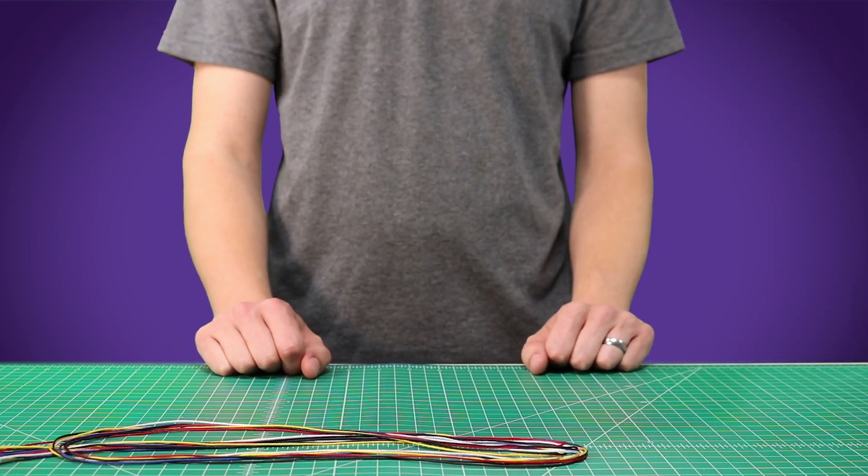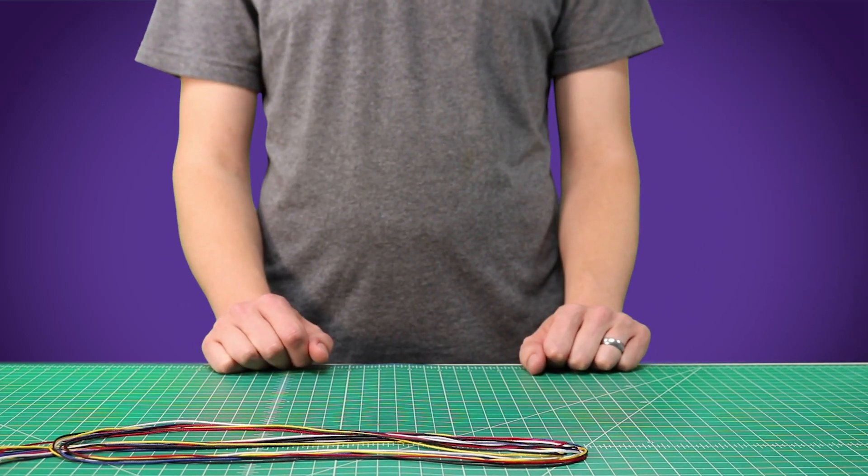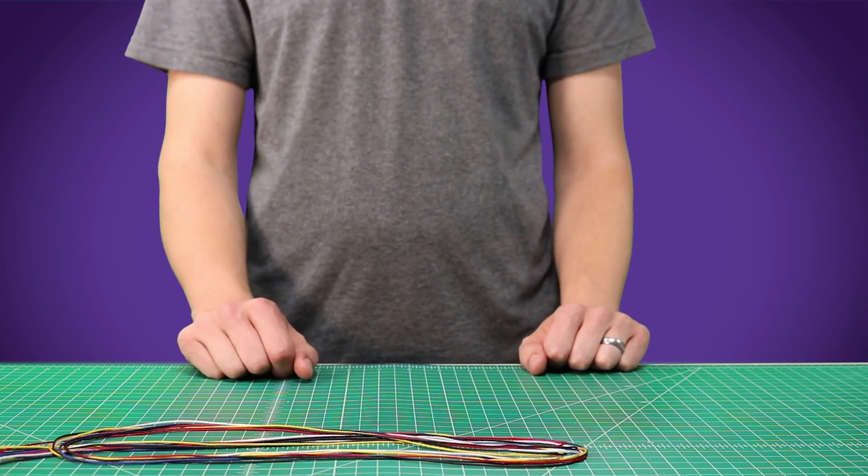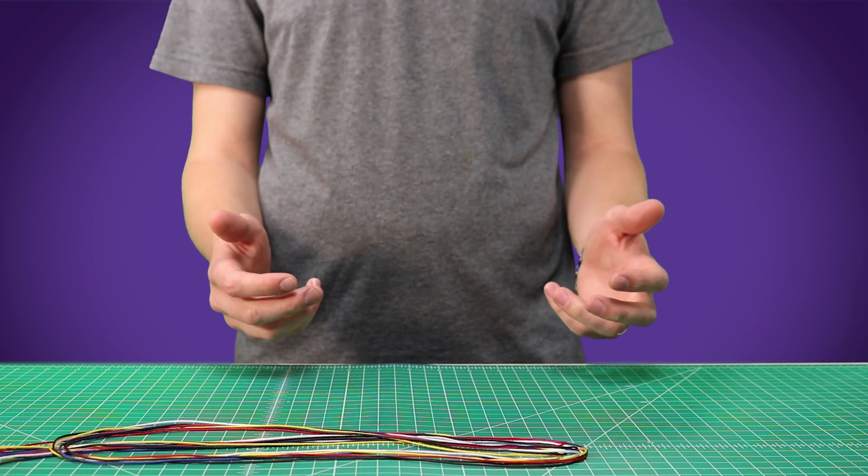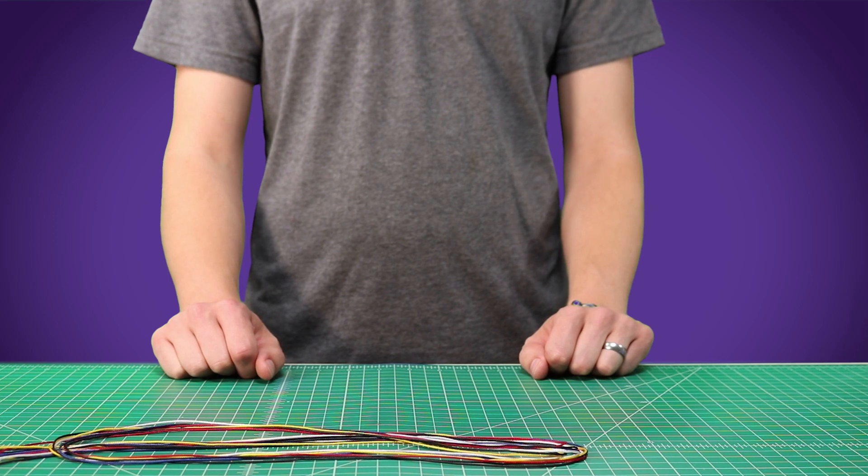Hey guys, welcome back to Paracord Planet. Today we're going to be making a variation on the 8 strand round braid using microchord. It's a little bit complicated to explain, so I think I could tell you best by showing you. Let's dive right in.